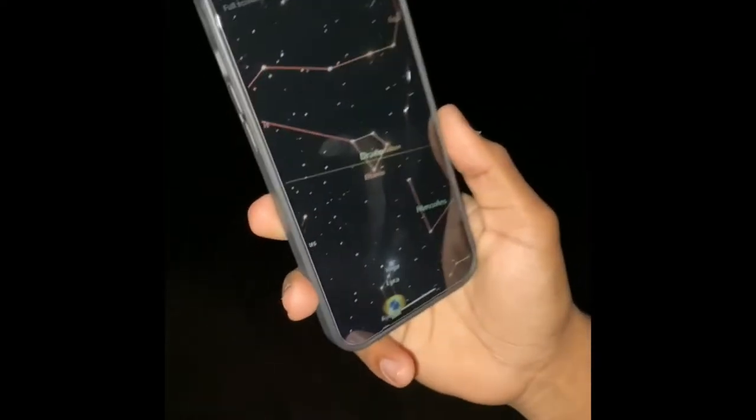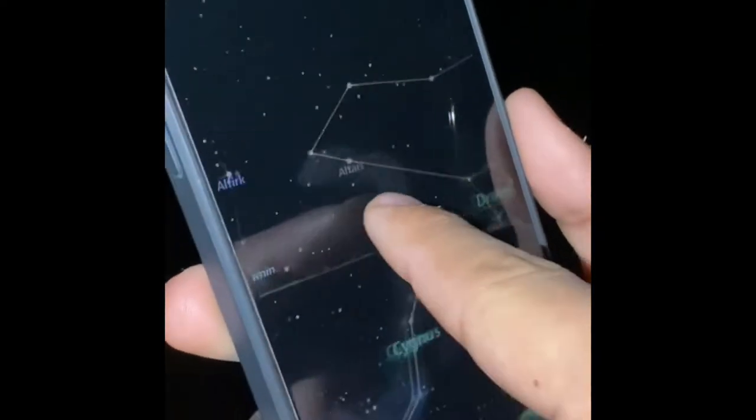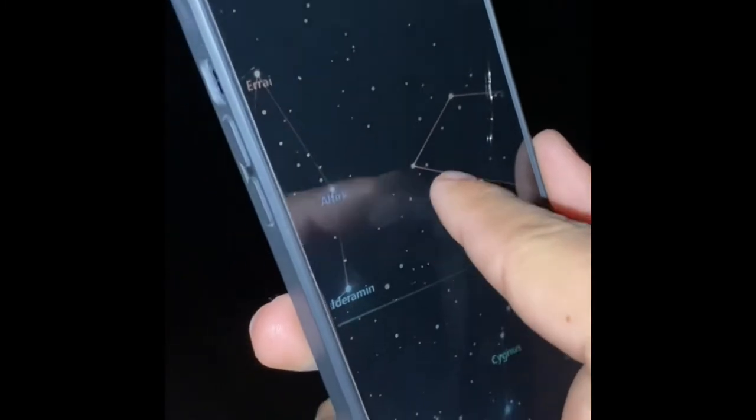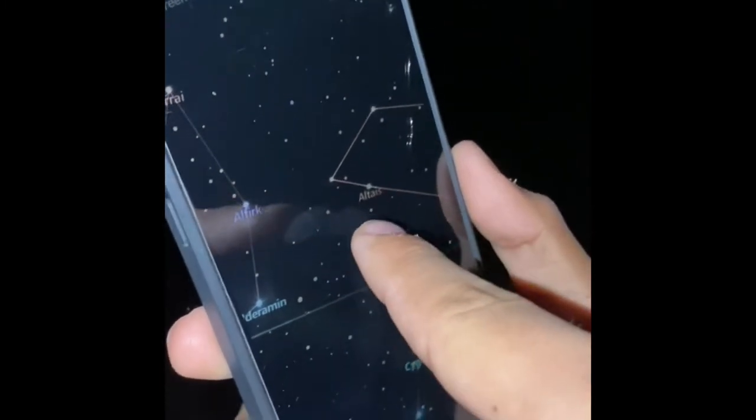So first what you have to do is you have to find the constellation that you're going to use. So today we're going to be using Draco, and we're going to be using the star right closest to the neck right there.